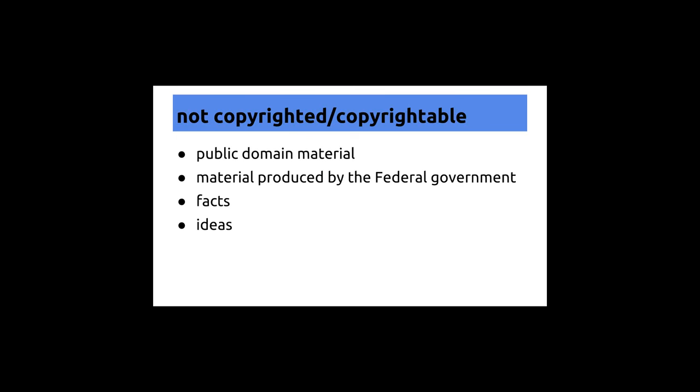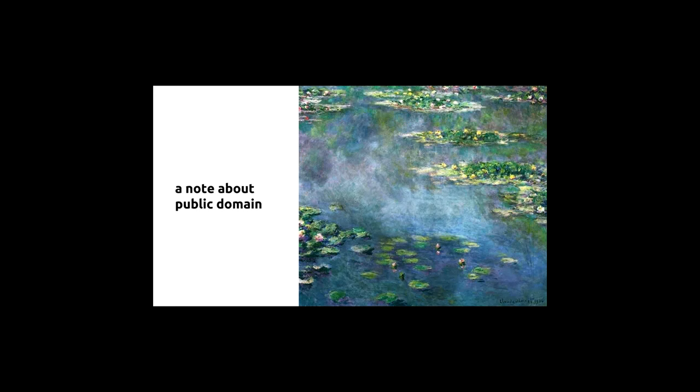To review: things that aren't copyrighted or copyrightable include things in the public domain, things produced by the federal government, and facts and ideas. The public domain is tricky — anything before 1923 we know is in the public domain, and then there's a class of stuff from 1923 through the middle of the century where it depends. It's not uncommon for cultural institutions that own public domain works to assert some sort of ownership rights over them.